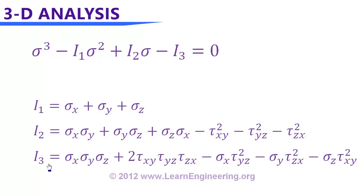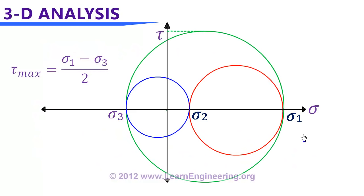For the maximum shear stress in a 3D case, a simple graphical method is used. Three Mohr circles are drawn corresponding to the three pairs of principal stresses: one between sigma_3 and sigma_2, one between sigma_2 and sigma_1, and a large circle between sigma_1 and sigma_3. The maximum shear stress occurs at the top of the largest circle, and its value is the radius of that circle: (sigma_1 minus sigma_3) divided by 2. This concludes the basic introduction to three-dimensional stress analysis. Thank you for watching.